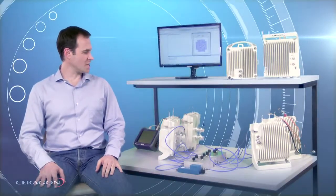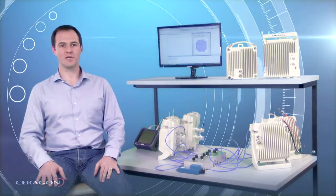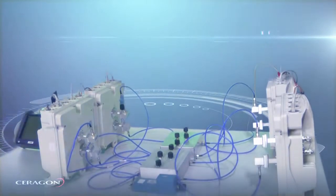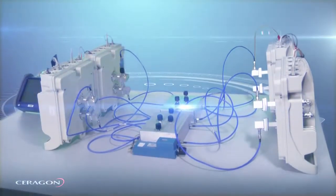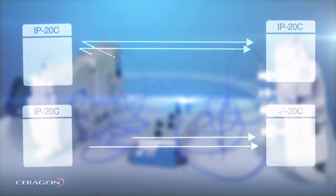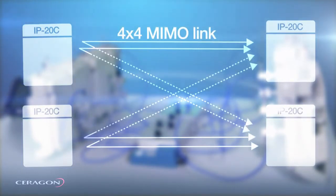This setup is a simulation of a 4x4 MIMO link. Each IP20C is processing two cross-polarized data flows so that two units on each side create in effect a 4x4 MIMO link.